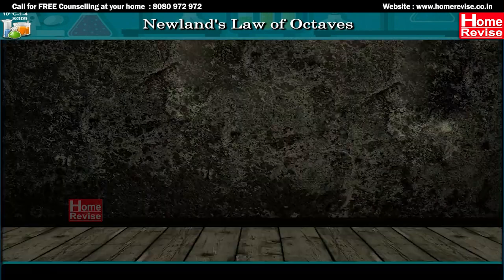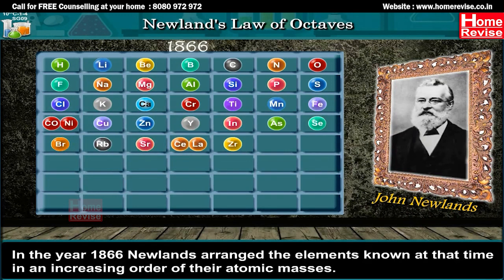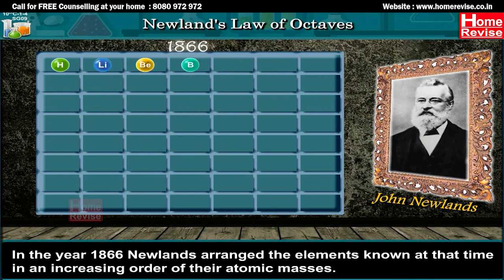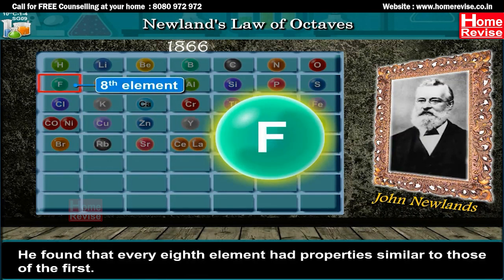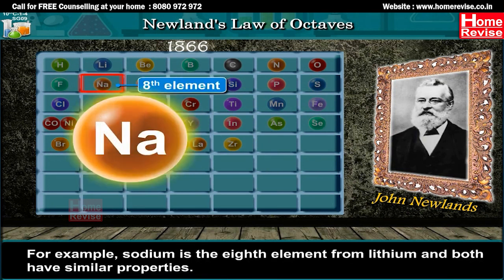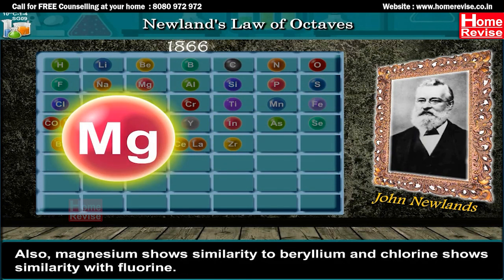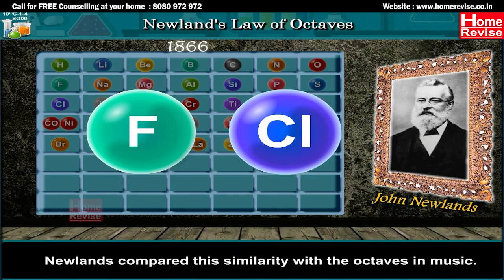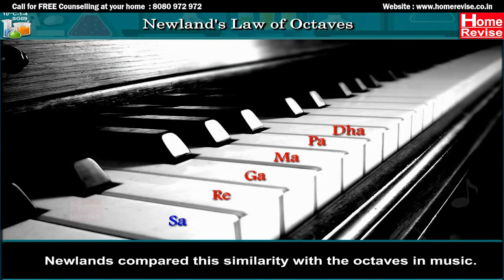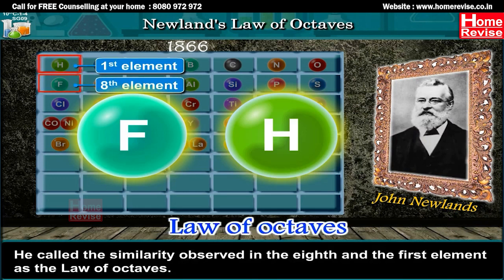Newlands' Law of Octaves. The English scientist John Newlands correlated the atomic masses of elements to their properties in a different way. In the year 1866, Newlands arranged the elements known at that time in an increasing order of their atomic masses. He found that every eighth element had properties similar to those of the first. For example, sodium is the eighth element from lithium, and both have similar properties. Also, magnesium shows similarity to beryllium, and chlorine shows similarity with fluorine. Newlands compared this similarity with the octaves in music, and called it the law of octaves.